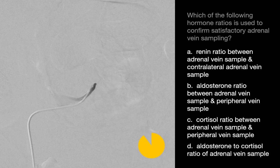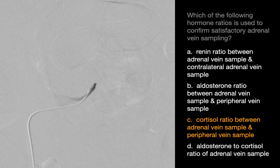Which of the following hormone ratios is used to confirm satisfactory adrenal vein sampling? The correct answer is C. We can confirm if a blood sample came from an adrenal vein by comparing its cortisol concentration against that of a peripheral vein sample. If the blood sample is truly an adrenal vein sample, its cortisol concentration should be at least 10 times higher than the peripheral venous cortisol concentration.